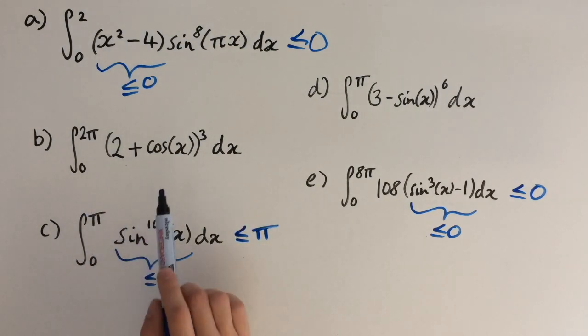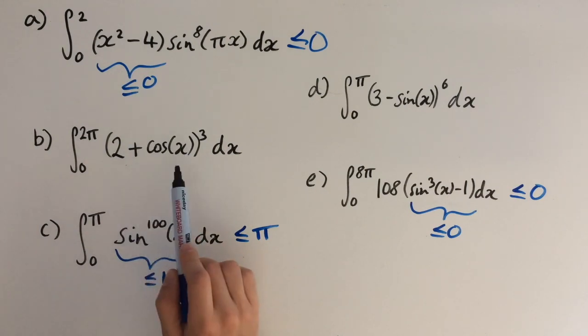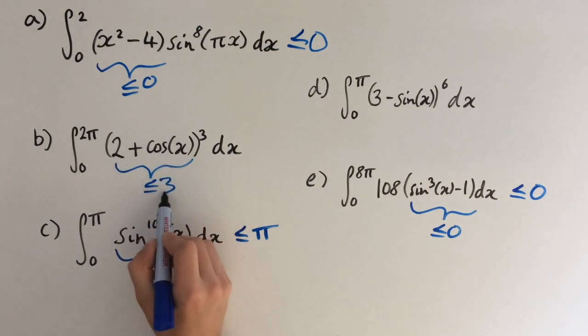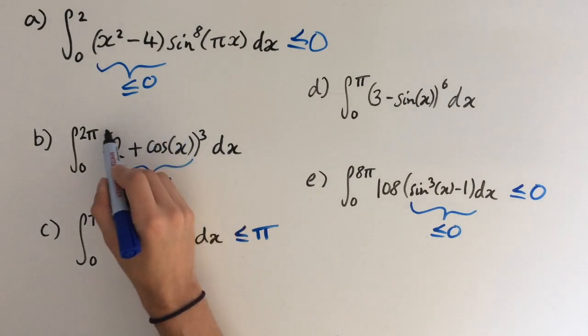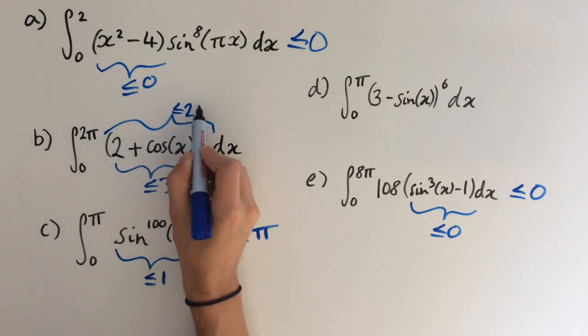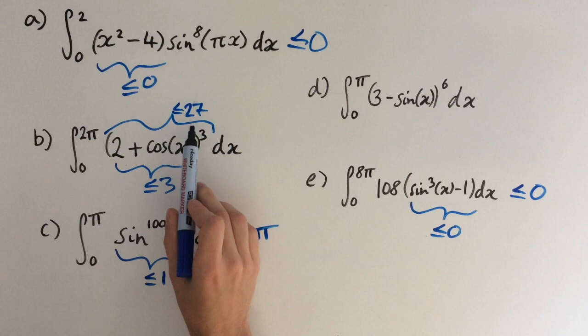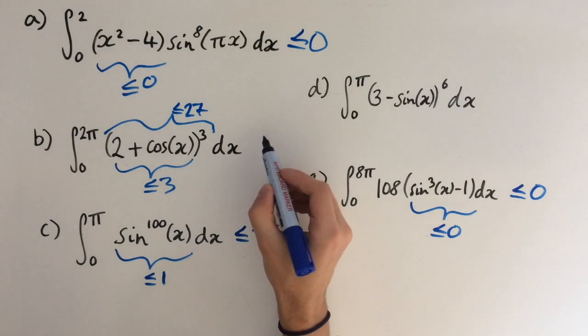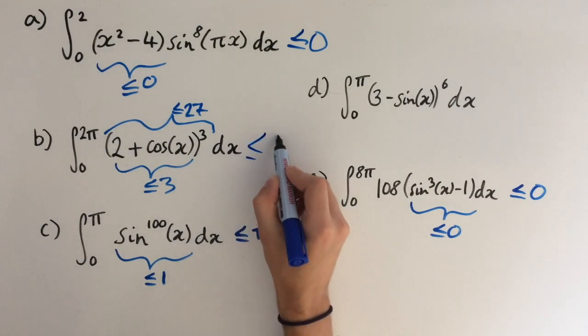Now let's look at b. It's a bit trickier. Cosine of x is between minus 1 and 1, so 2 plus cosine of x is less than or equal to 3. So we know in here, this is less than or equal to 3. But if we cube it, then this expression right here is going to be less than or equal to 27, because that's 3 cubed. And if we integrate 27 between 0 and 2 pi, we'll get 27 times 2 pi, which is 54 pi. So we know that this integral is less than or equal to 54 pi.